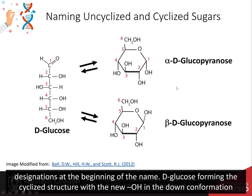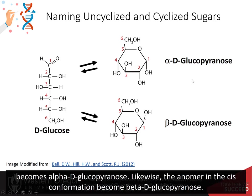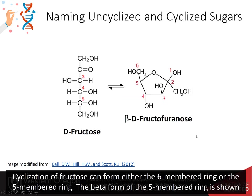Add in alpha or beta designations at the beginning of the name. D-glucose forming the cyclized structure with the new hydroxyl in the down conformation becomes alpha-D-glucopyranose. Likewise, the anomer in the cis conformation becomes beta-D-glucopyranose.